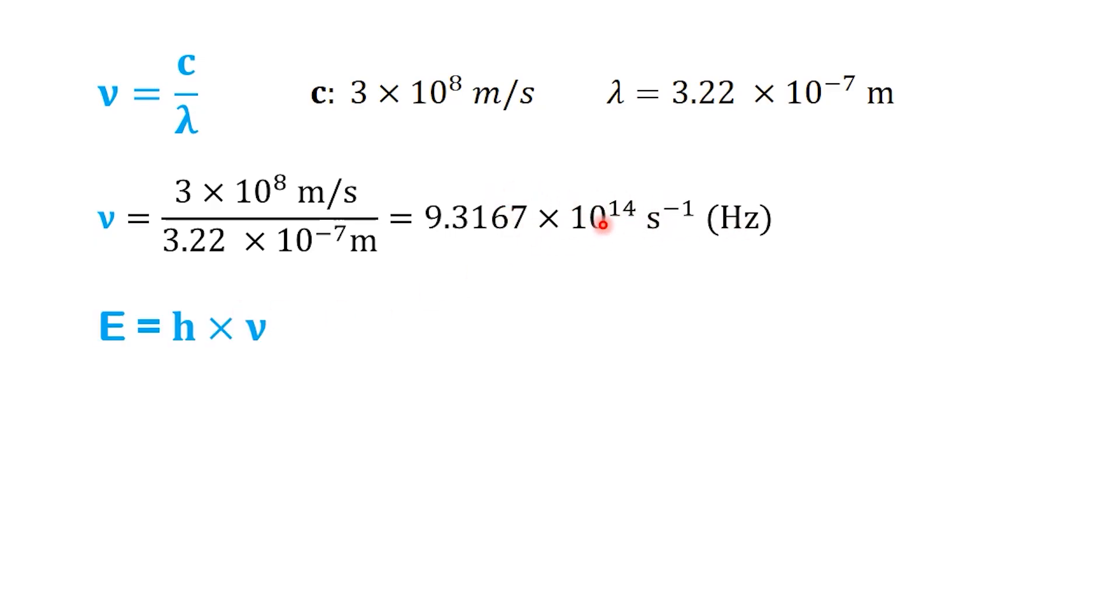Now, plug that straight into E equals H times nu. E equals 6.626 times 10 to the minus 34 joule seconds, multiplied by 9.31677 times 10 to the 14 per second. The per second from the frequency cancels with the seconds in joule seconds, leaving just joules. That gives us 6.173 times 10 to the minus 19 joules.